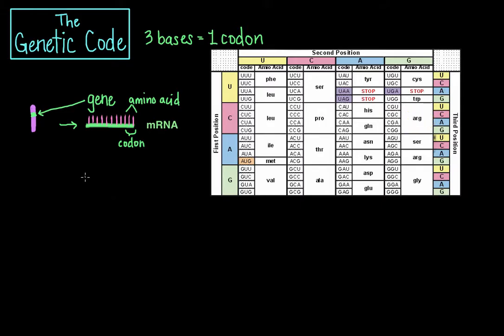The genetic code is the set of rules by which information coded within genetic material is translated into proteins by living cells. Biological decoding is accomplished by the ribosome, which links amino acids in an order specified by mRNA, using transfer RNA molecules that read the mRNA three nucleotides at a time using their anticodon loop, and then carry the corresponding amino acid to be added to the growing polypeptide chain.